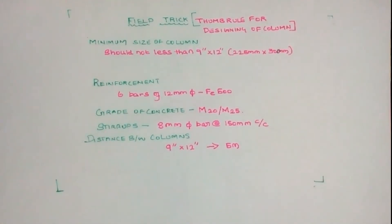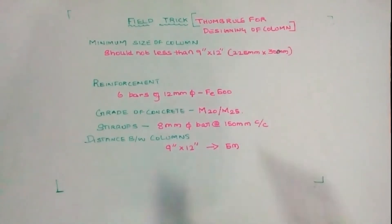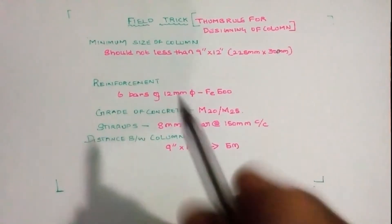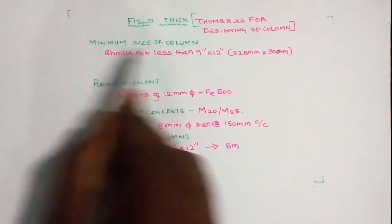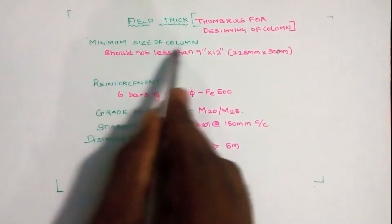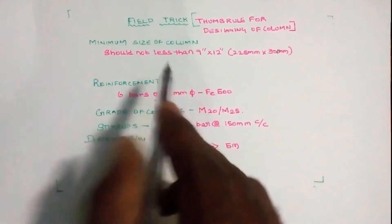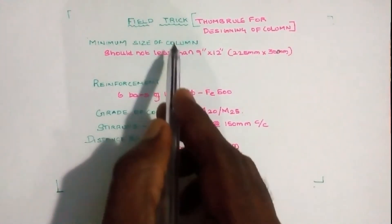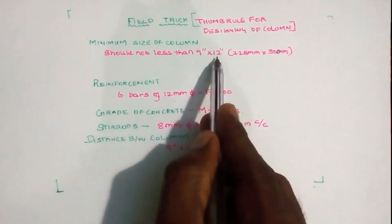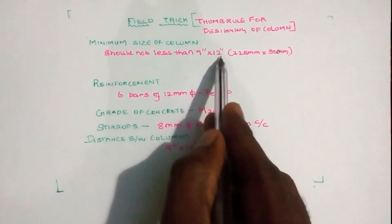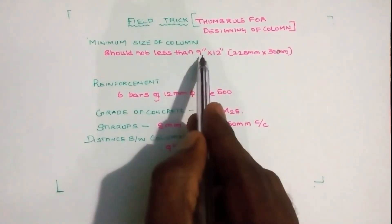Let's go through this step by step using the same dimensions used in the field. The first step is the minimum size of a column.